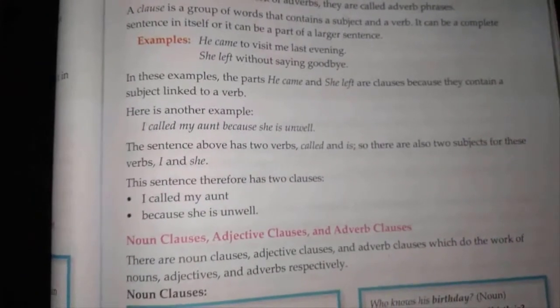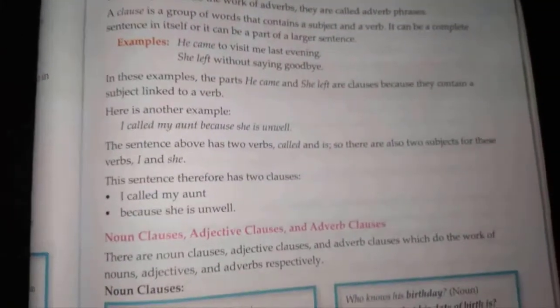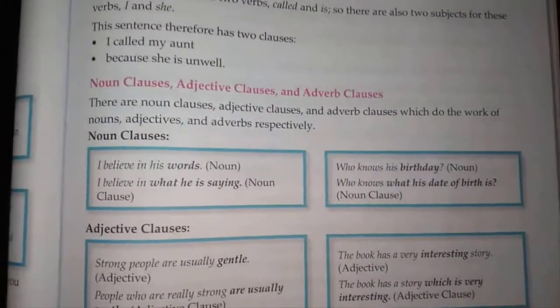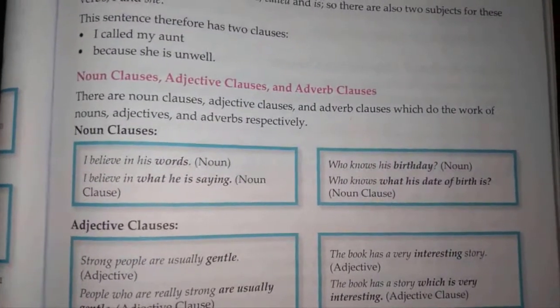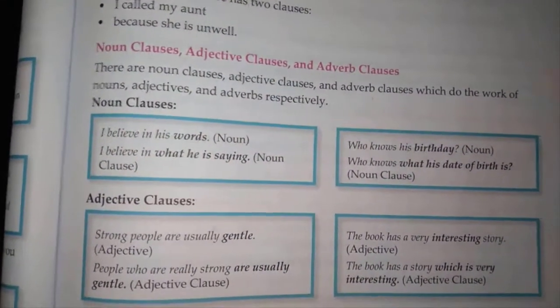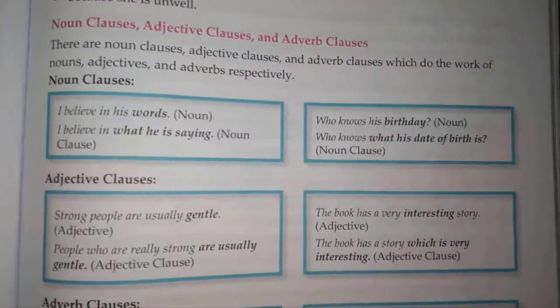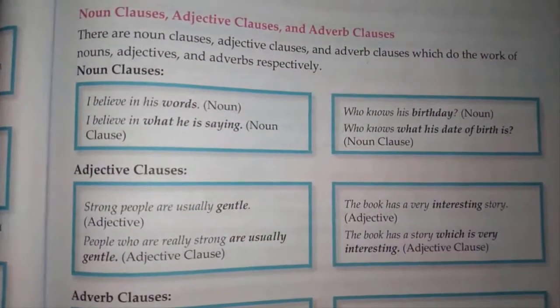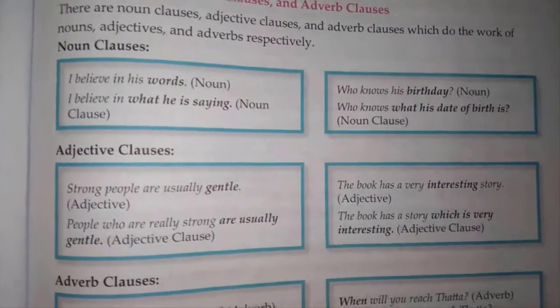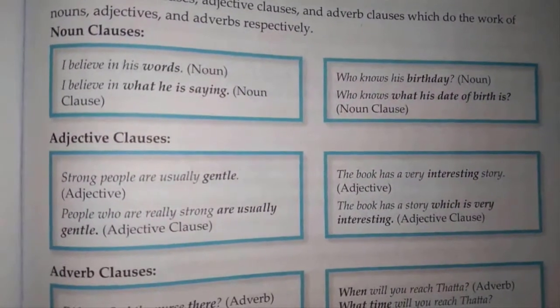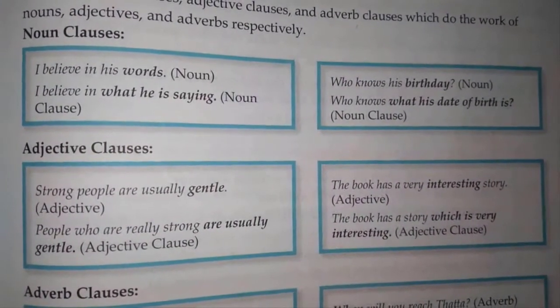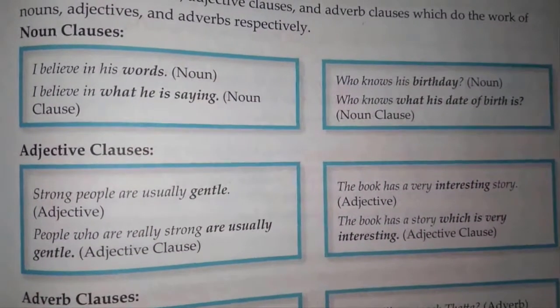Now let's look at noun clauses, adjective clauses, and adverb clauses, which do the work of nouns, adjectives, and adverbs. Noun clause examples: 'I believe in his words' — noun. 'I believe in what he is saying' — noun clause. 'Who knows his birthday?' — noun. 'Who knows what his date of birth is?' — noun clause.